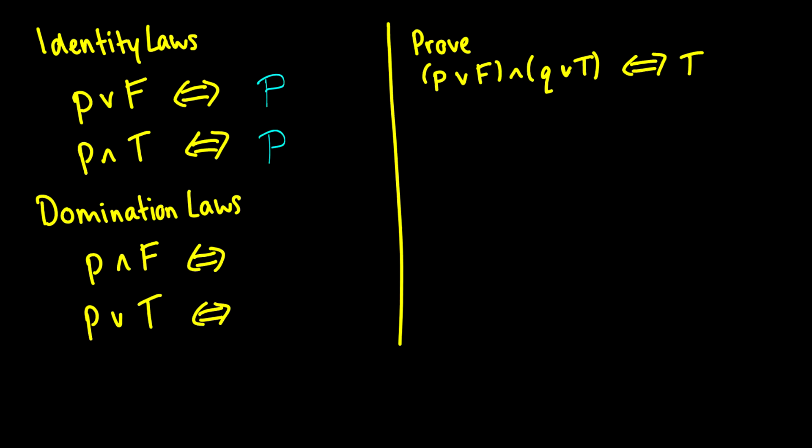And for domination laws, if we have P and false, well, every line is false, because false is every line. So this is the same thing as F. And if we have P or true, at least one of them has to be true, and true is always true, therefore the whole thing is true. And these are called domination laws, because the letters dominate the statements, and these are identity laws because you can get the same result. It's an identical statement.